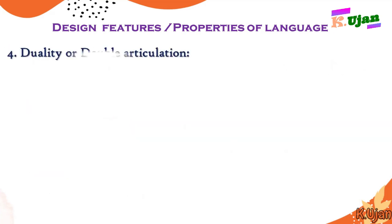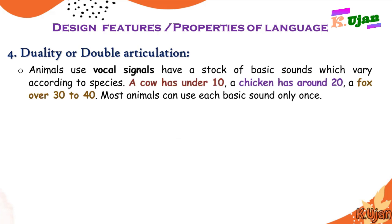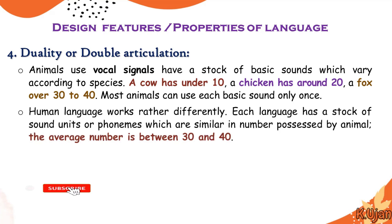The fourth property of language is called double articulation, or duality. Animals that use vocal signals have a stock of basic sounds which vary according to species — a cow has under 10, a chicken has around 20, a fox over 30 to 40. Most animals can use each basic sound only once. So vocal signals in animals differ by species: cows, chickens, and foxes each have their own distinct set of sounds.